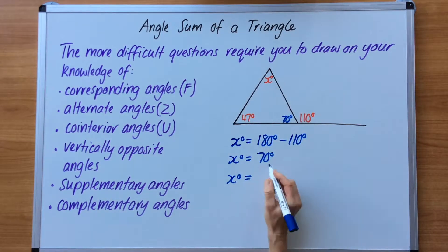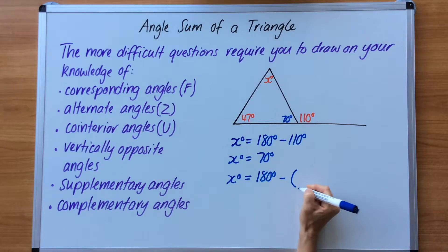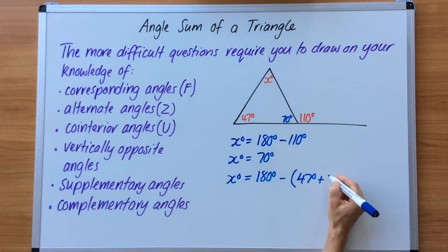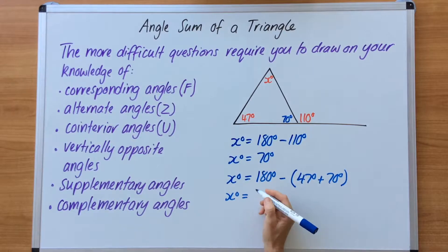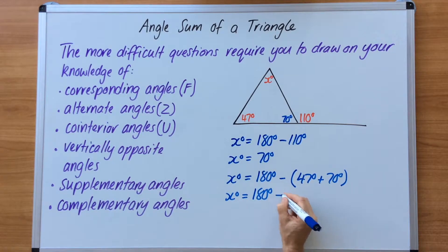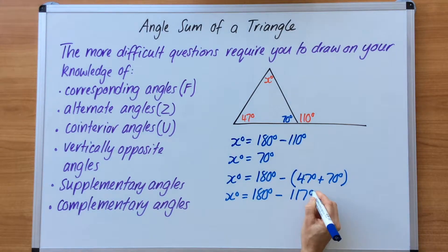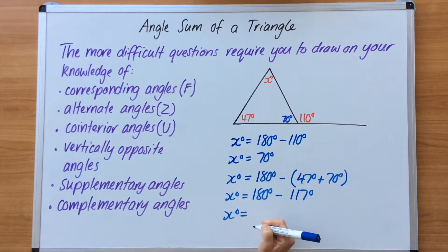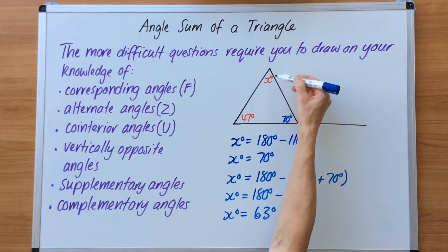x degrees equals 180 degrees — which is the angle sum of a triangle — minus the information that I know, which is 47 degrees plus 70 degrees. Drop down to the next line: 180 degrees minus — now I have to add this up — and this comes to 117 degrees. Move down to the bottom line and solve: 180 minus 117 is 63 degrees. So now I have just solved the value of x.